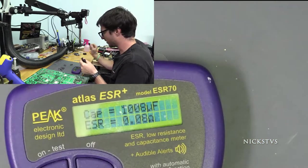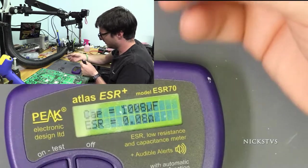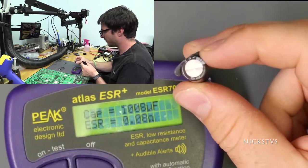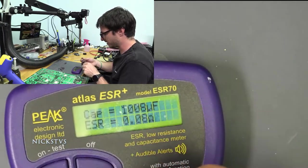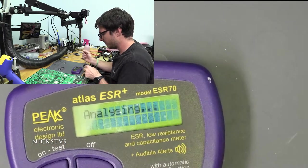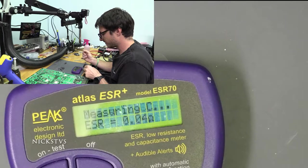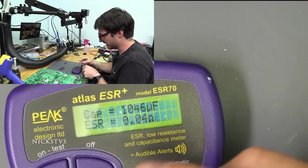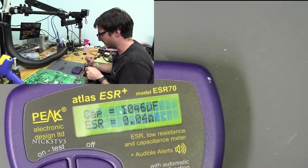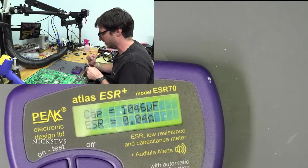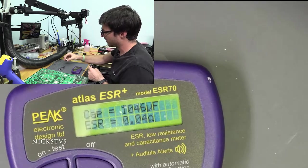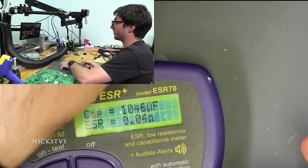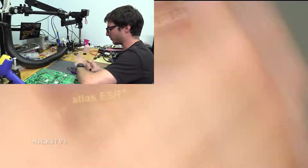Now just to see, we have one of the capacitors we removed that is not bulged. Let's just measure it and see how that one reads. So this one's actually reading okay. It's saying 1046 microfarads and ESR equals 0.04. So technically that's good. But because all of these capacitors are known to fail eventually, we're just going to replace all of them.